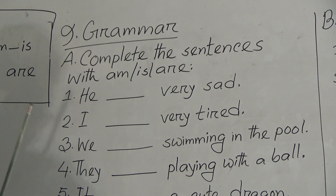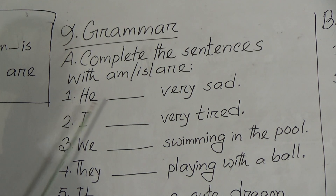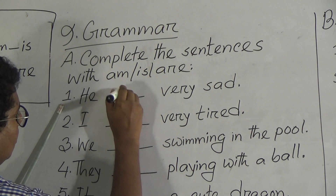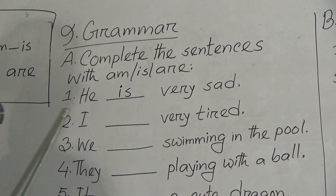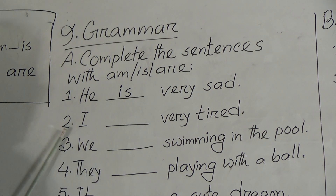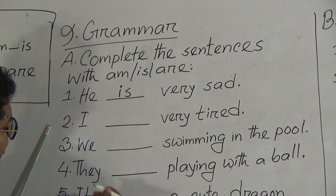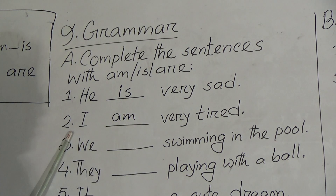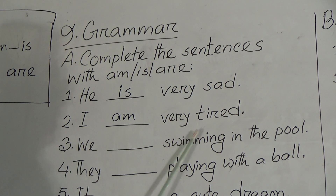First one: Number 1, he dash very sad. So he is one, and after he we have to use 'is'. He is very sad. Number 2: I dash very tired. So after I we use 'am'. I am very tired.